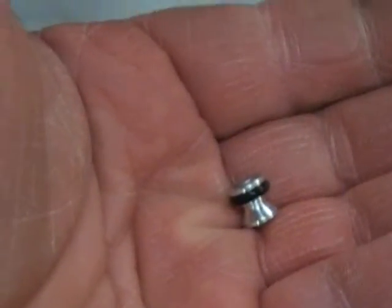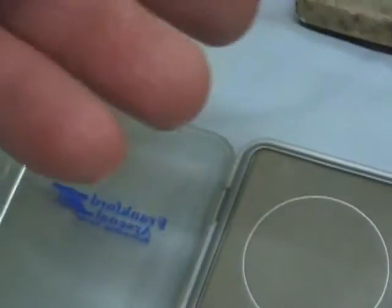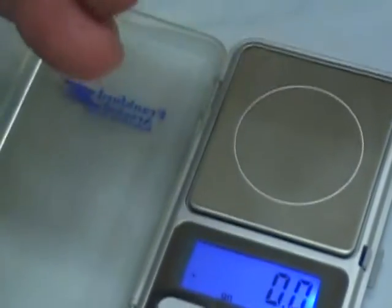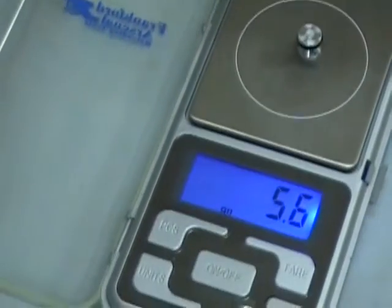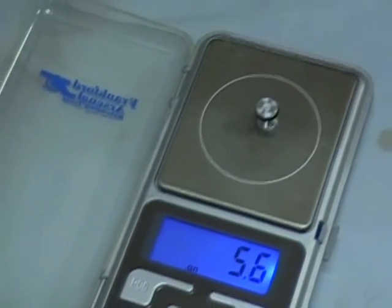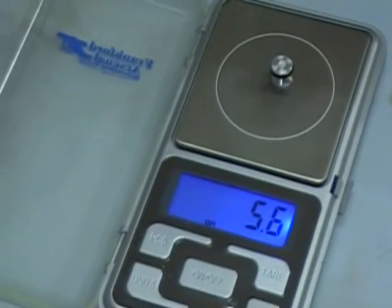I'm going to turn the scale on. Special aluminum pellet with an o-ring made of 7075 aluminum. We'll go ahead and weigh it. 5.6 grains, so fairly light.